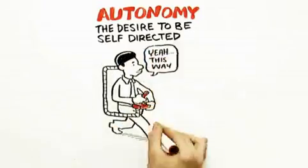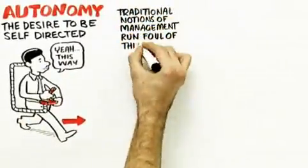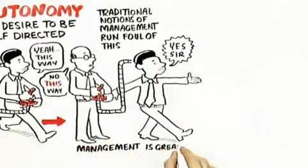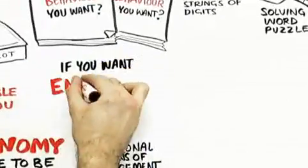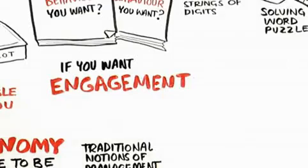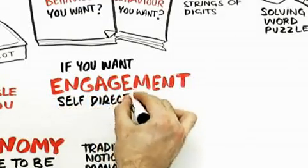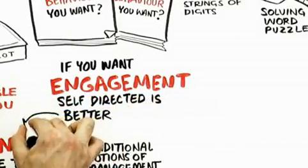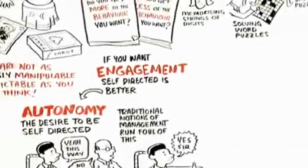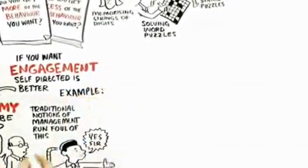Autonomy is our desire to be self-directed, to direct our own lives. In many ways, traditional notions of management run afoul of that. Management is great if you want compliance, but if you want engagement, which is what we want in the workforce today as people are doing more complicated, sophisticated things, self-direction is better.